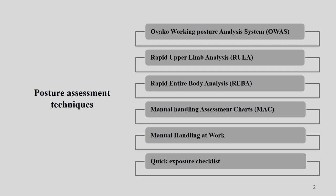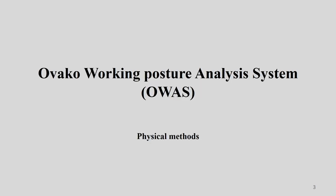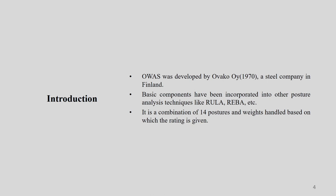Let us start with the OWAS working posture analysis system. This is a very old tool, and as per my understanding and from many other researchers' understanding, this is the primitive and oldest tool in posture assessment. It was developed in 1970 by a company named OWAS — a steel company in Finland — where the safety and health department developed this tool. The basic components of various other tools such as RULA and REBA are actually derived from this particular tool.